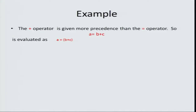In C, the plus operation is given more precedence than the assignment operation. So I really want to interpret this expression as a equal to b plus c — doing b plus c first and then taking that result and assigning it to a. One way of ensuring that is to say: whenever equal to and plus appear together, give more importance to plus and do that first. Precede means going first.